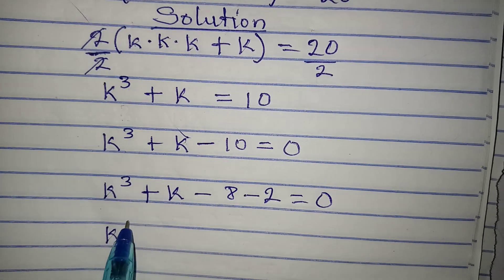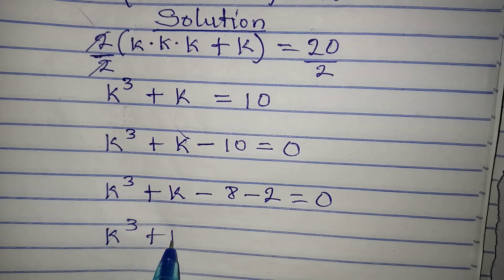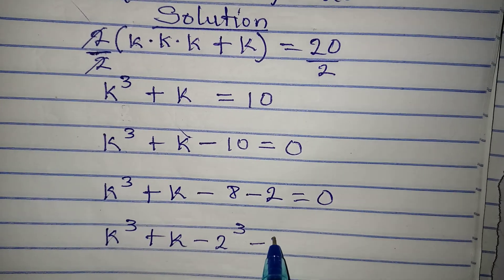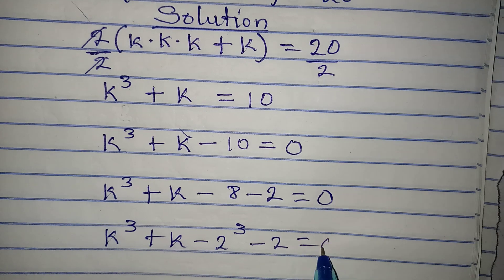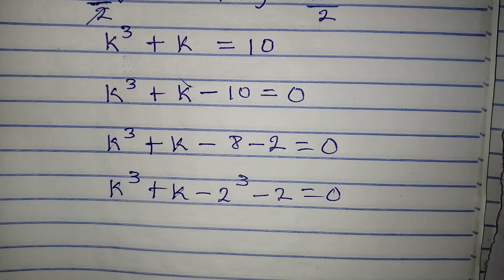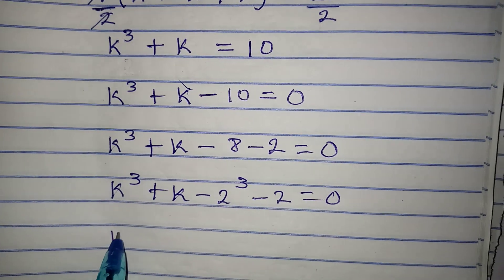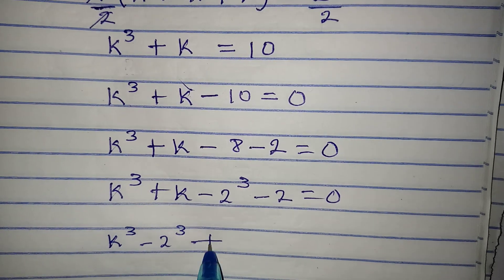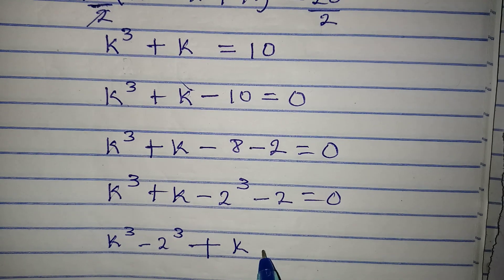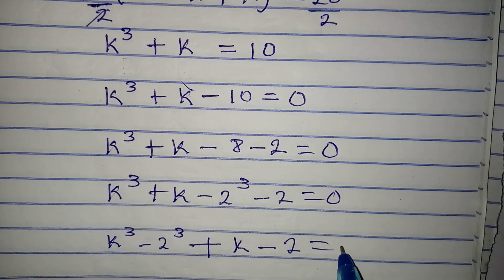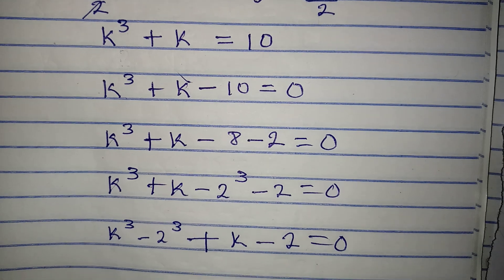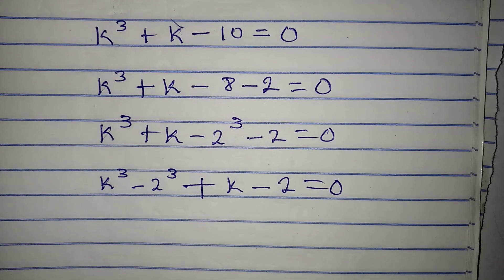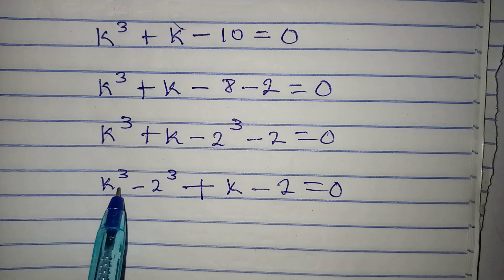So we rearrange to get k³ minus 2³ plus k minus 2 equals zero. We have now achieved our target, which is to bring k³ and 2³ together so we can apply the difference of cubes rule.